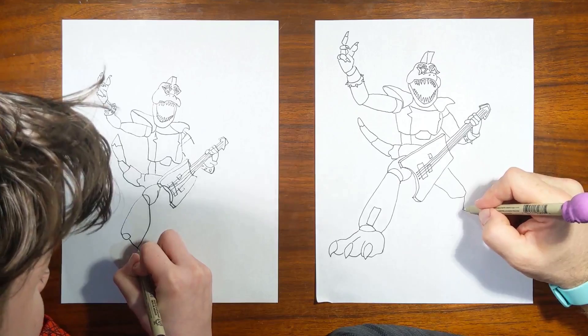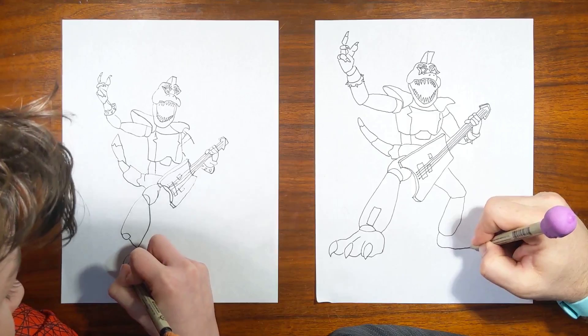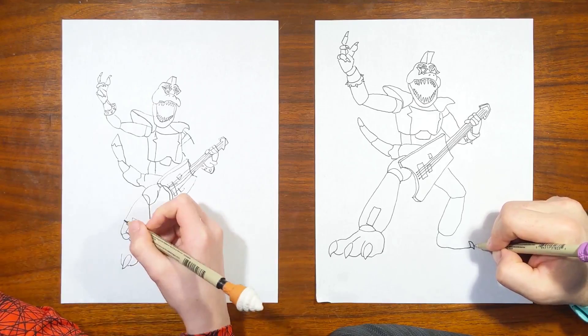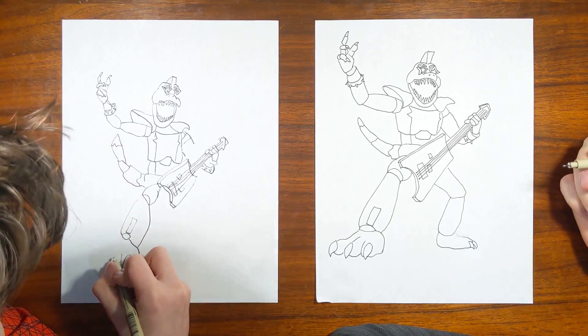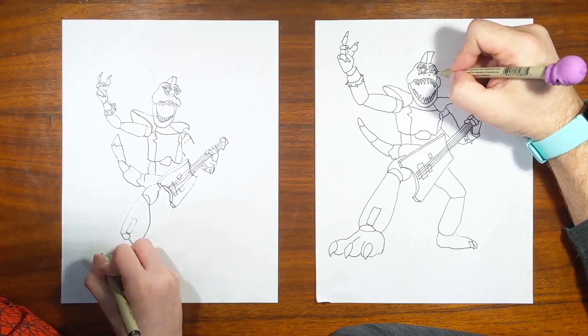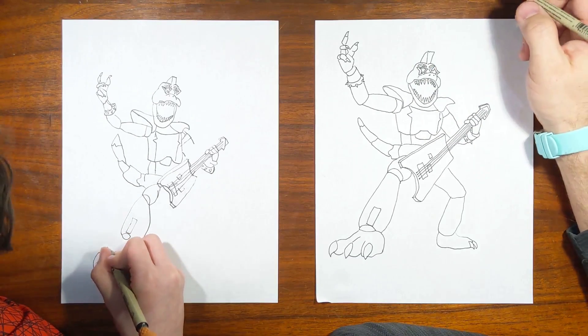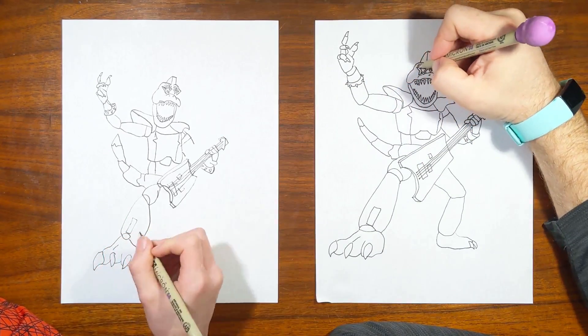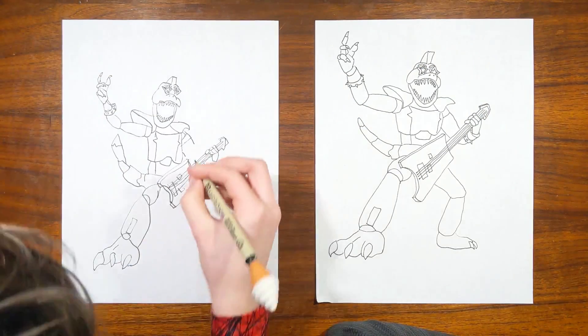And then we'll have Monty's fingers come through here. There we go. And now, finish drawing the head of the guitar. Cool, cool, cool. And then just a little bit of a 3D look here. And then just some of the details of the guitar itself. We've got these rectangles here.